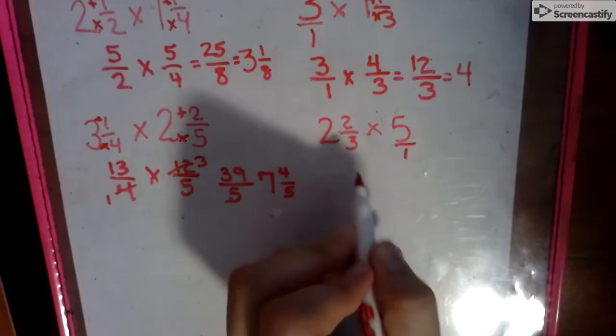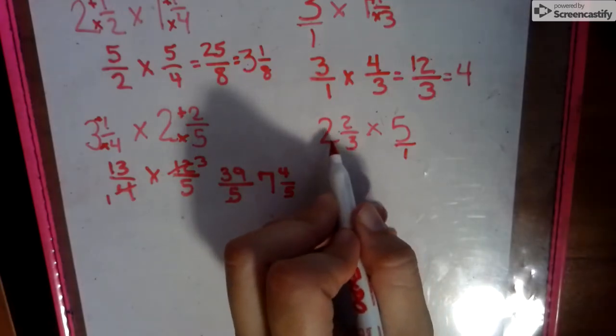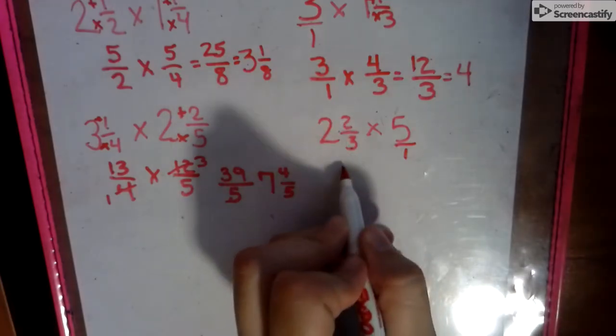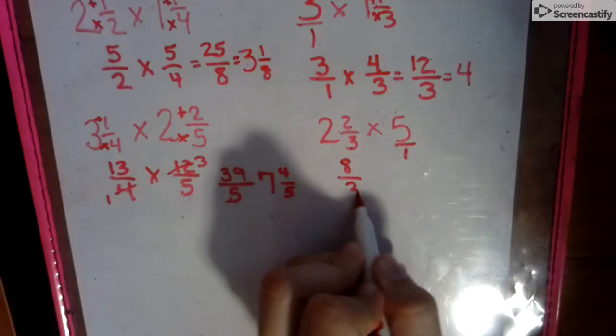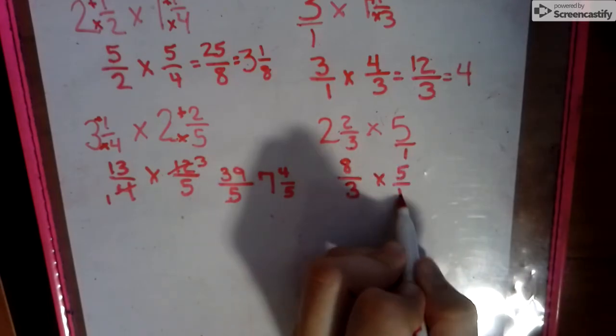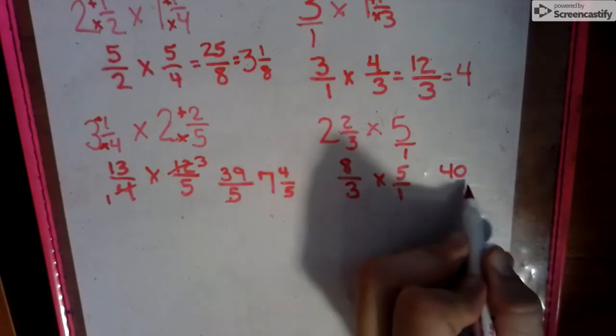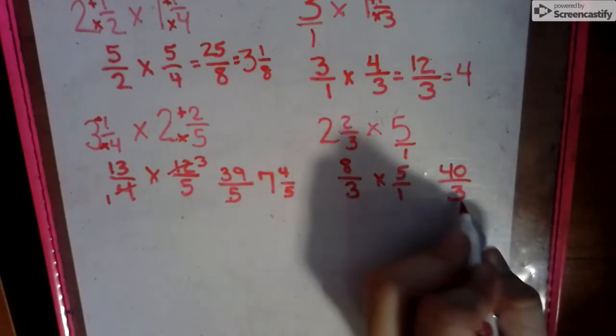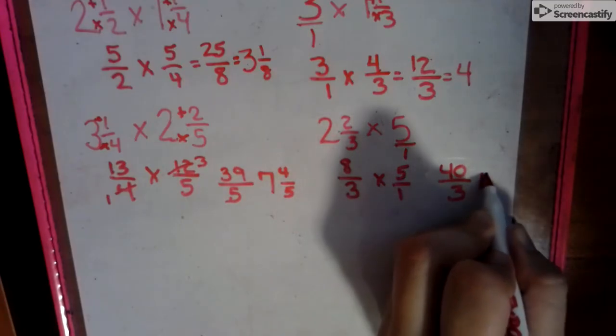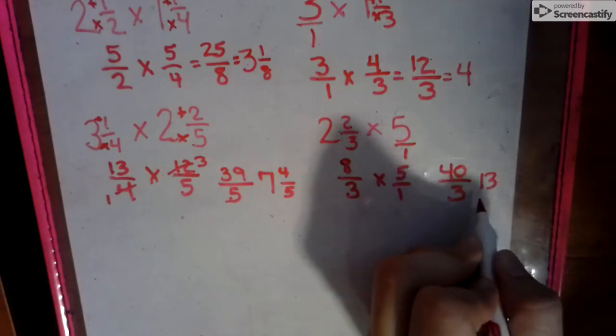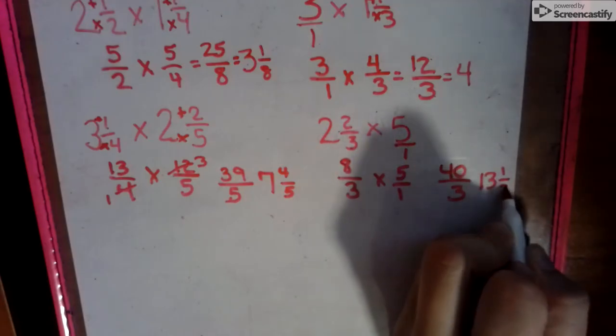All whole numbers go over 1. 3 times 2, 6, 7, 8, 8 thirds times 5 over 1. No diagonals in common. So we have 40 over 3. 3 goes into that 13 times to make 39 with 1 left over over 3.